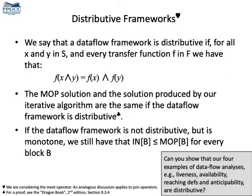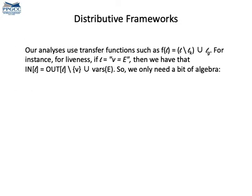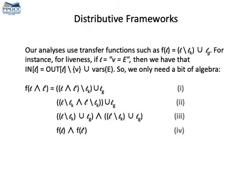Do you remember the equations we used for liveness analysis or reaching definitions? Let's focus on liveness analysis. Can you show that the transfer functions used in liveness analysis are distributive? In liveness, the transfer functions have the form involving set difference and union. With some algebra, we can show that the transfer function of a meet operation is the same as the meet of the results of independent applications of the transfer function. There is a proof here for you, which you can read. To see why these equalities hold, remember that meet is some set operation — either intersection or union in this example.